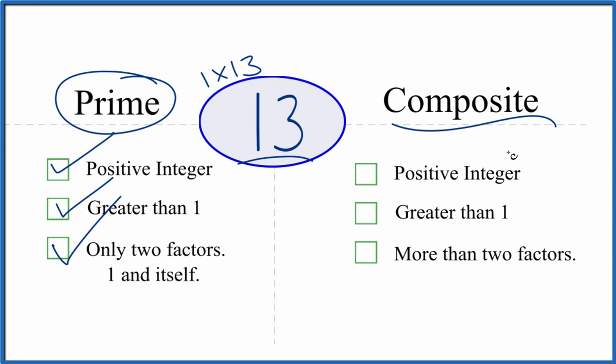But is it a composite number? It's a positive integer, greater than 1. But are there more than two factors? We just said there are only two factors. So it can't be composite.